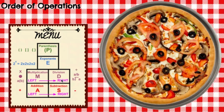Last is addition and subtraction. Again, at the same level, you're going left to right with addition and subtraction — plus sign and minus sign. So that's what those look like. Now we know this is the order we go in. Let's get to the practice.